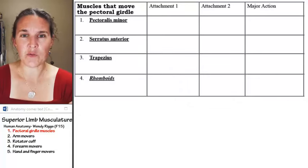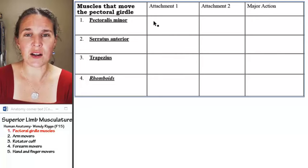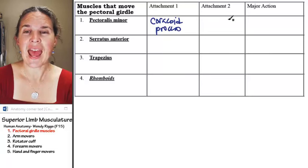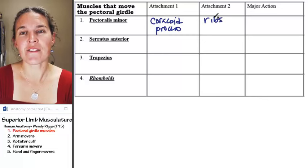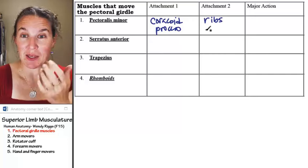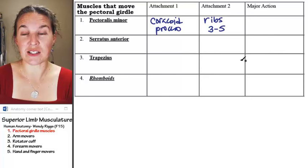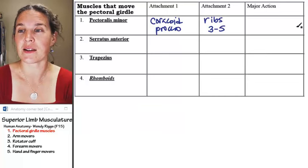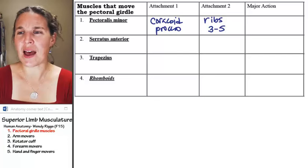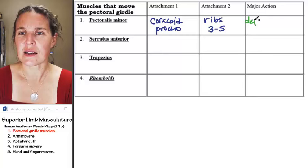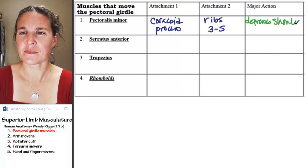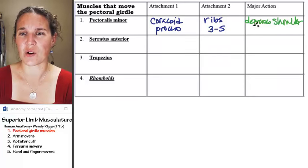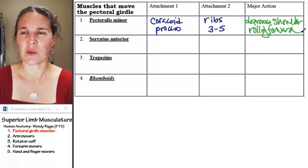Let's go ahead and fill this in for pec minor. One attachment is the coracoid process, and the other attachment is ribs three through five. I vividly remember dissecting and finding the pec minor, counting the ribs — seeing pec minor on ribs three through five is just stuck in my brain. Dissection is pretty amazing. The action is that it depresses the shoulder. More precisely, it's depressing the scapula and rolling it forward — protracting it.